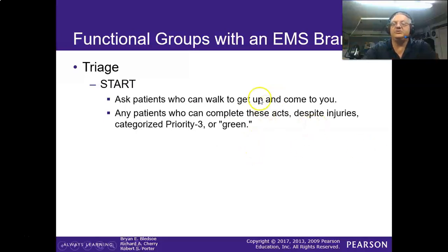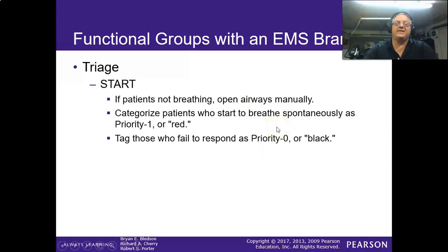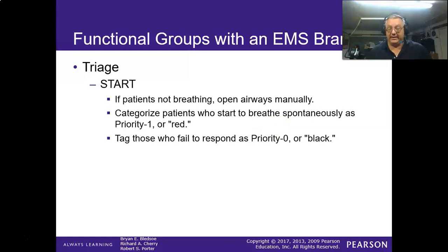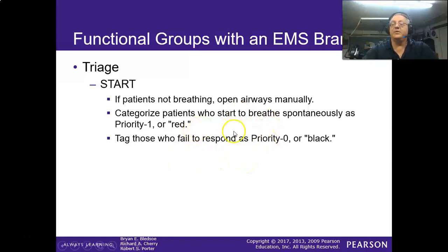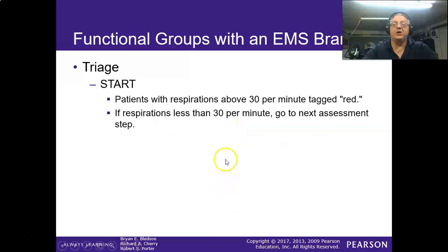Despite injuries, we can reclassify them later if we determine their situation is more perilous than we thought. If someone's walking over with an open abdominal wound holding their guts, they're not green — I'd tie the red ribbon around them. When START triage: if the patient's not breathing, we open their airway. If they still don't breathe, they're dead. If they open their airway and start to breathe, they are red at that point — tag them and go.